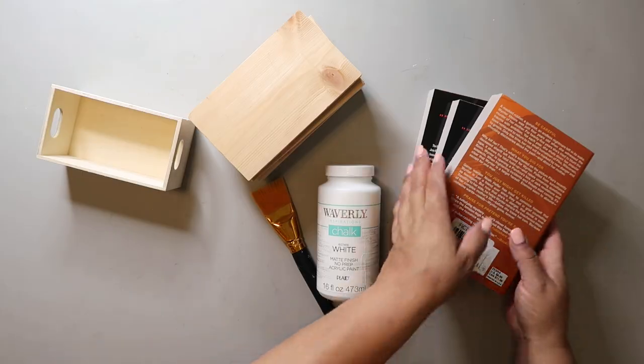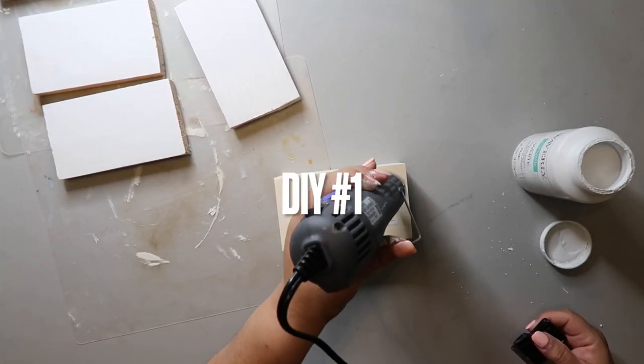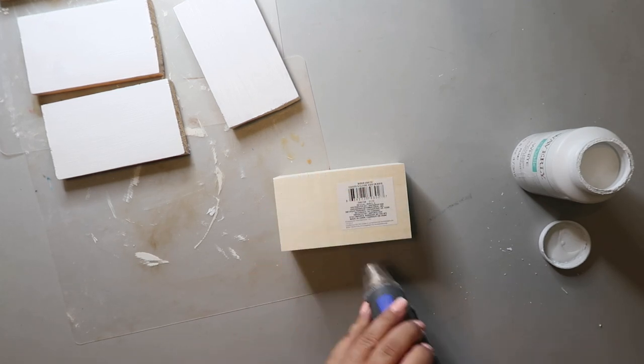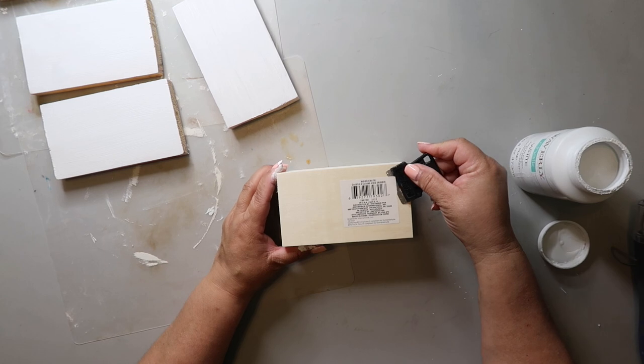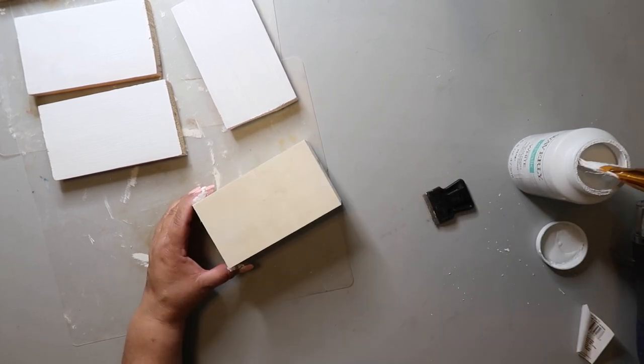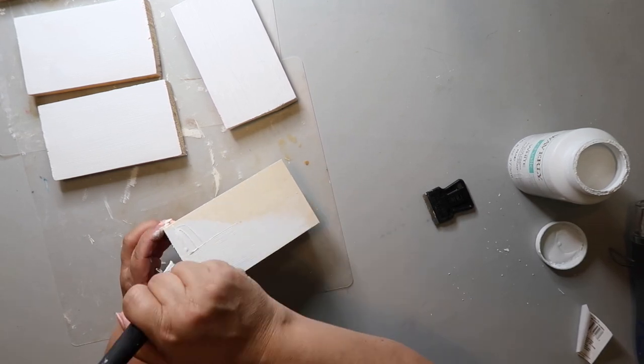Let's start off with the crate. I always take off any stickers, especially for this piece because you're definitely going to see them. When it comes to Dollar Tree crates you also do need to give it a light sanding to get off any of the rough edges. Then I took some Waverly chalk paint in the color white and gave it a good coat.